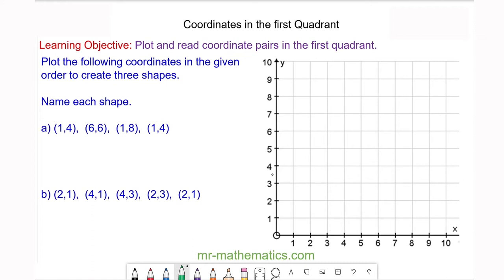A coordinate pair is made up of an x and a y value. The x and y value tell you the distance from the origin, which is this point here, and the origin has a special coordinate pair which is (0,0).